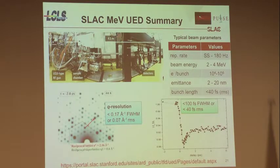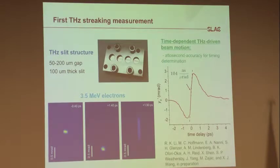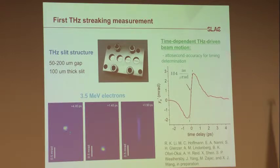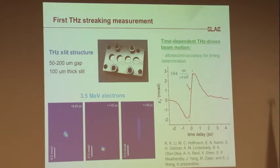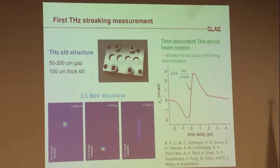One recent development is we have developed terahertz used both as a pump source for ultra-fast experiments and for diagnostics. By moving the terahertz delay, we can use terahertz as a streak camera to measure electron beam bunch length and timing jitter. This plot shows that with our current terahertz, we can achieve sub-femtosecond temporal resolution — a powerful tool to further optimize UED performance and reduce temporal resolution from 100 femtoseconds down to 10–20 femtoseconds.